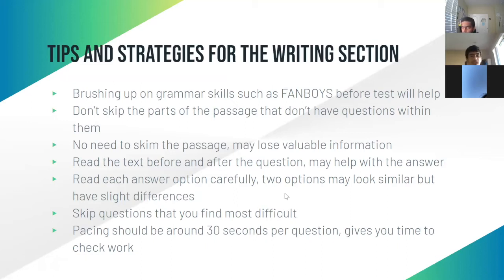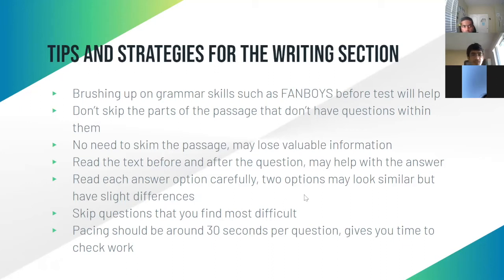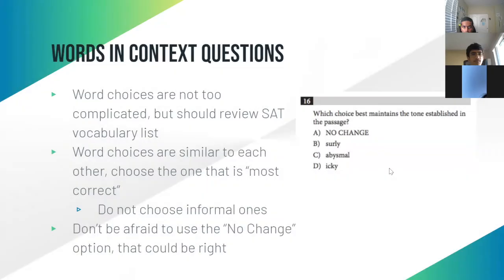Skip questions you find most difficult — this advice applies to all sections. You want to attempt all questions on the SAT rather than spending too much time on one and having to skip several at the end. Pacing should be around 30 seconds per question, which gives you time to check your work. On average you have 47 seconds per question, so going faster is strongly recommended.